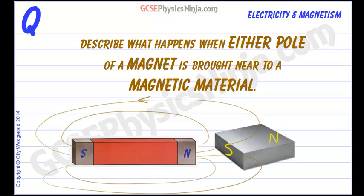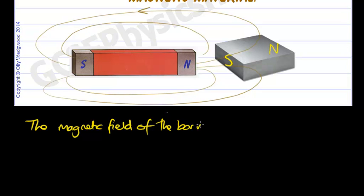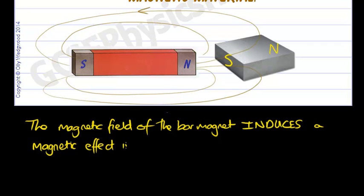So let's put that into words now. We can say that the magnetic field of the bar magnet induces - and there's your key word - induces a magnet or a magnetic effect in the magnetic material.